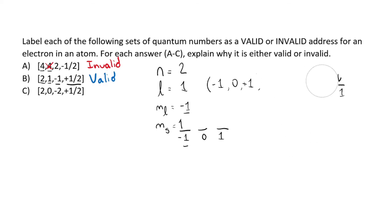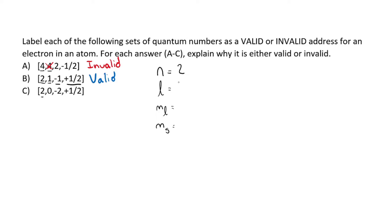Let's look at the next one. The shell is two and the subshell is zero — that works, because under shell two you can have zero or one. But then the magnetic quantum number is negative two, and you can't have a negative two under a zero subshell — you can only have zero. A zero subshell is an s subshell. So this one is invalid. That's how you do this question. If you have any other questions, email me. Thank you for watching.